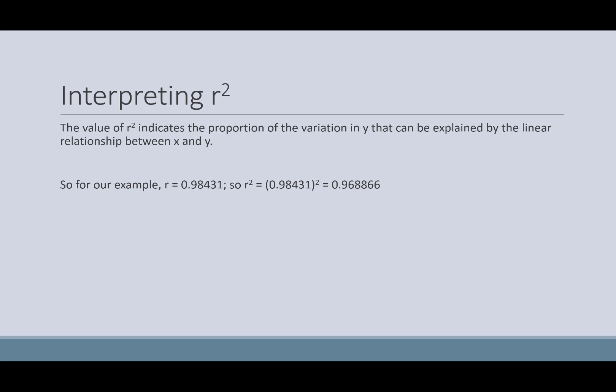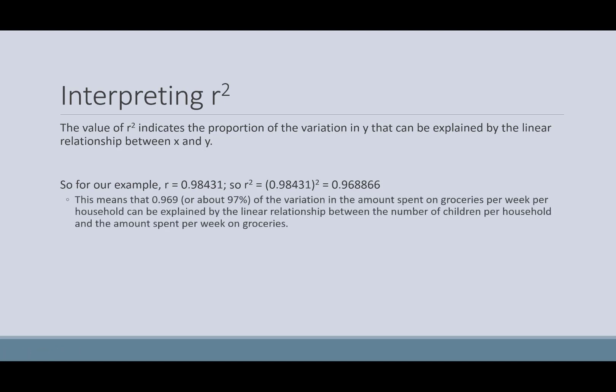So what this means is that .969, so if I round it to my three decimals, that would round to .969. Or about 97%, if I turn that to a percentage, of the variation in the amount spent on groceries per week per household because this right here was my y topic. So I'm looking in the amount of variation in the y topic can be explained by the linear relationship between the number of children per household and the amount spent per week on groceries.